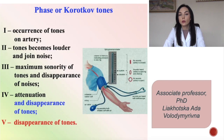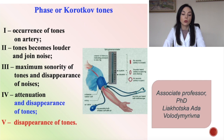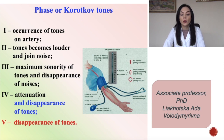Here is a picture showing the phases of Korotkoff tones — our famous doctor who discovered five tones heard during measurement of blood pressure. Phase one: occurrence of tones on arteries. Phase two: tones become louder and join with noise. Phase three: maximum sonority of tones and disappearance of noises. Phase four: attenuation and disappearance of tones. Phase five: complete disappearance of tones.